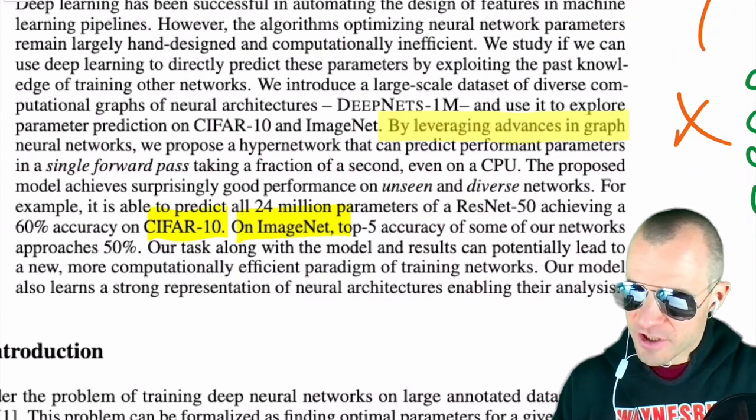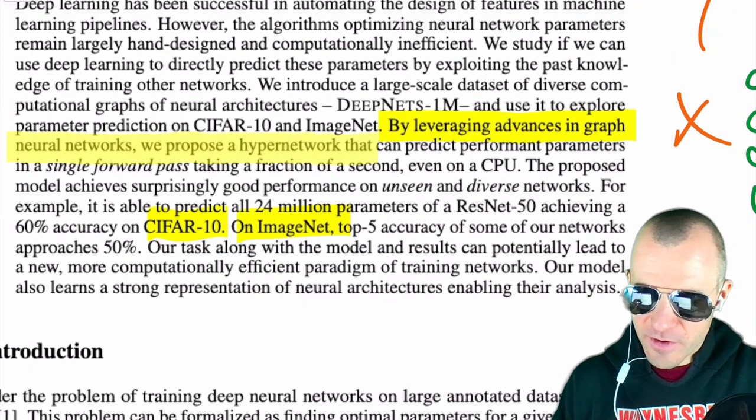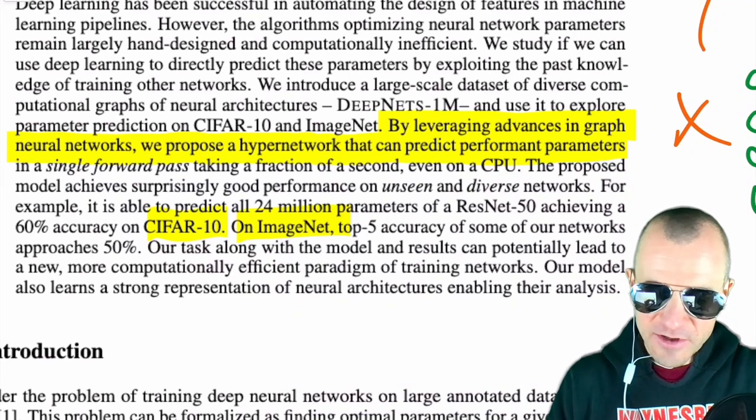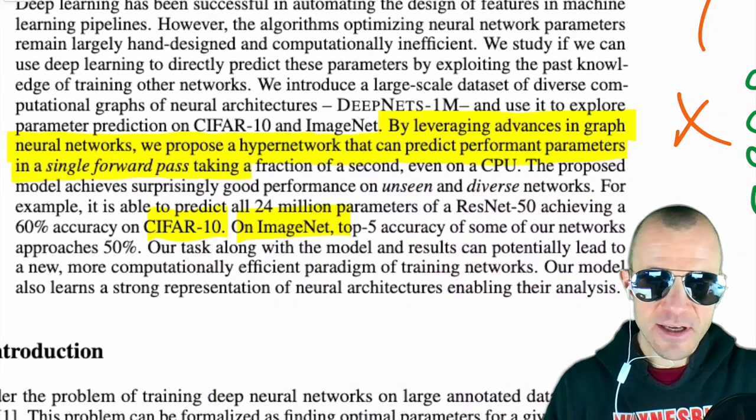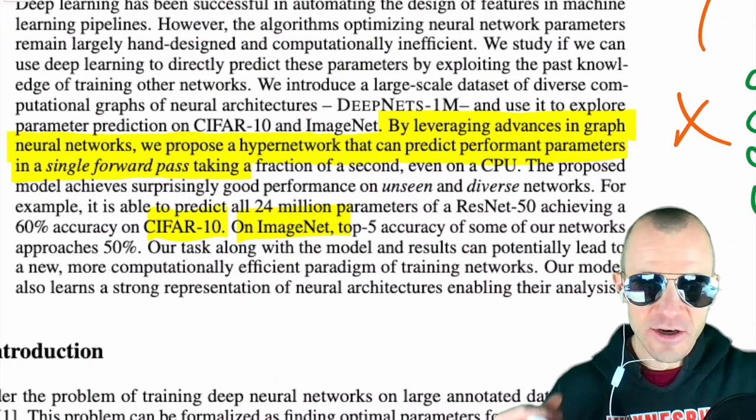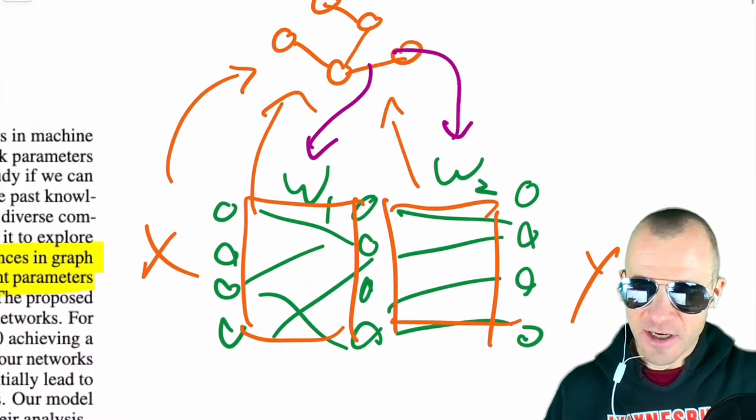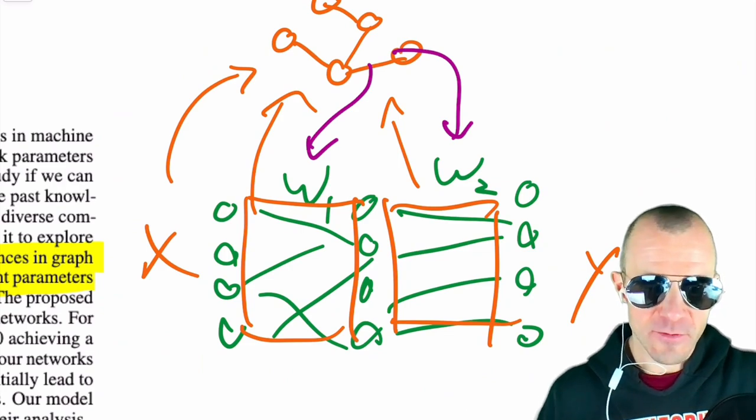By leveraging advances in graph neural networks, we propose a hyper network that can predict performant parameters in a single forward pass. The phrase 'single forward pass' highlights the difference from meta-optimizers that require many iterations — in our case it's a single propagation through the graph neural network, and then you get these parameters out.